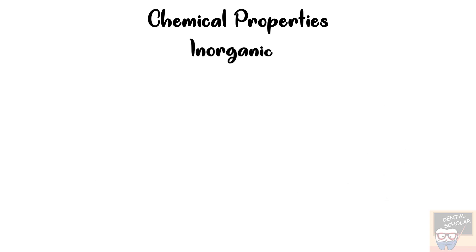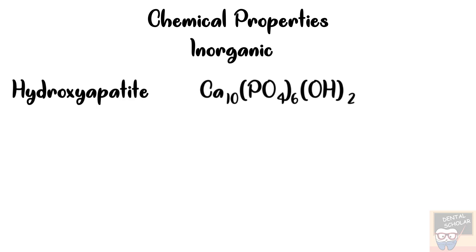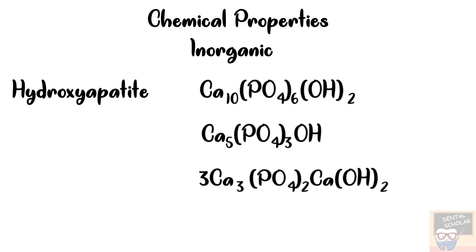First I will tell you about the inorganic component of enamel. The inorganic crystals of enamel is called hydroxyapatite. Its chemical formula is Ca10(PO4)6(OH)2. This formula may be halved and be written as Ca5(PO4)3OH. It may also be written as 3Ca3(PO4)2·Ca(OH)2. So these are the three different forms in which the chemical formula of hydroxyapatite may be written.